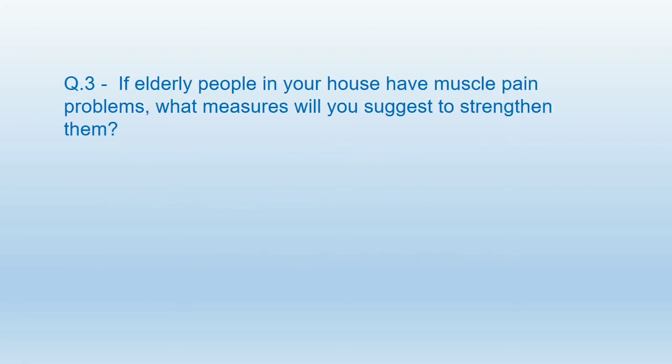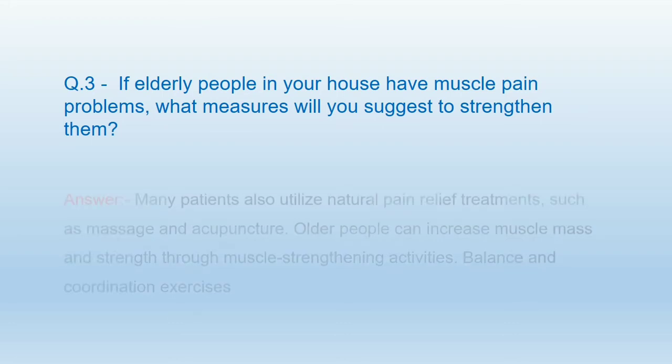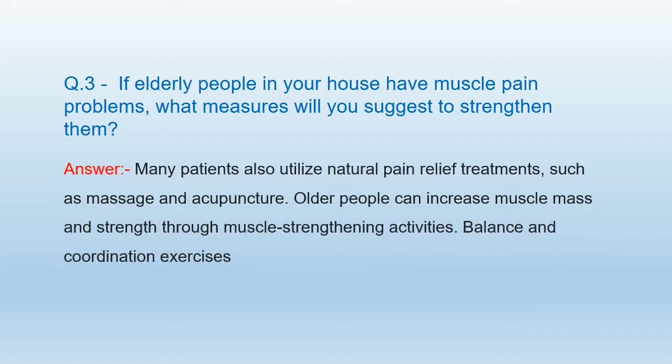Question number 3: If elderly people in your house have a muscle pain problem, what measures will you suggest to strengthen them? The answer is: Many patients utilize natural pain relief treatments such as massage and acupuncture. Older people can increase muscle mass and strength through muscle strengthening and stretching activities, as well as balance and coordination exercises.